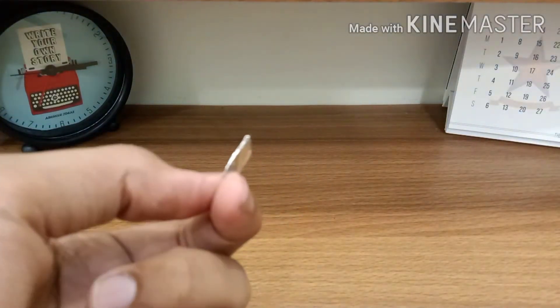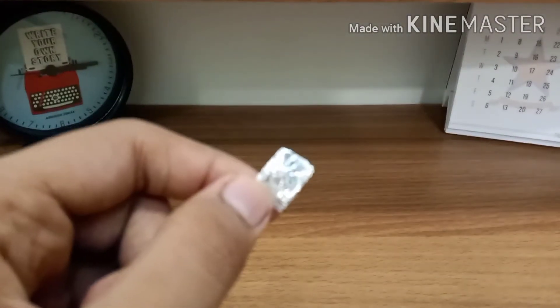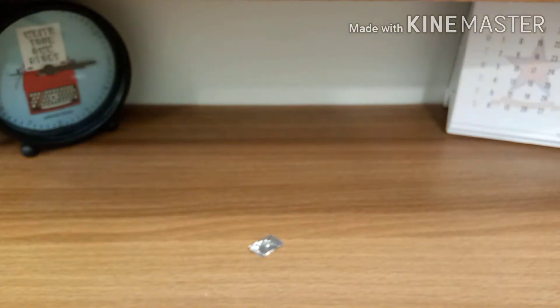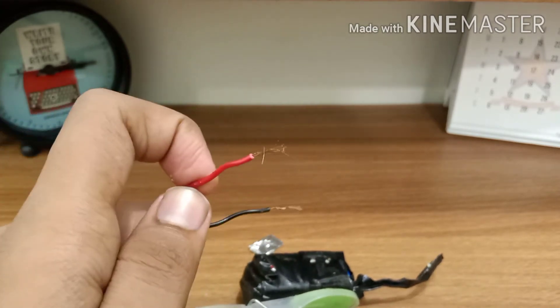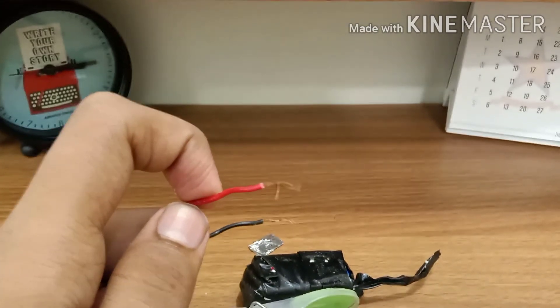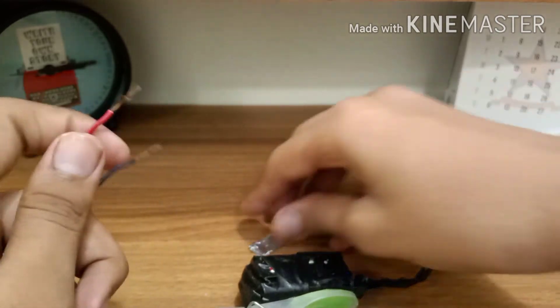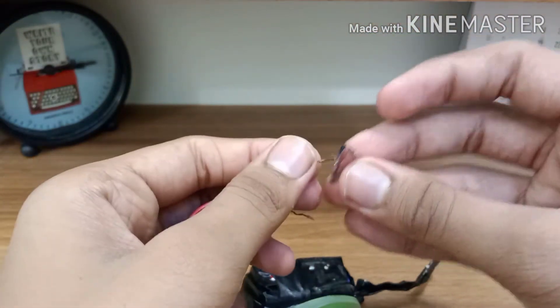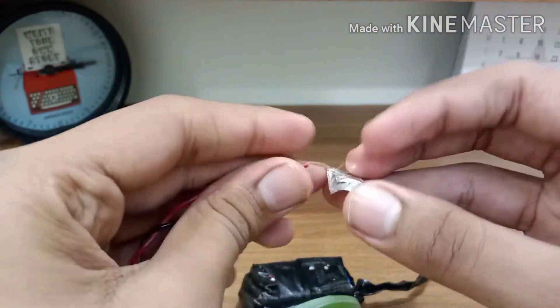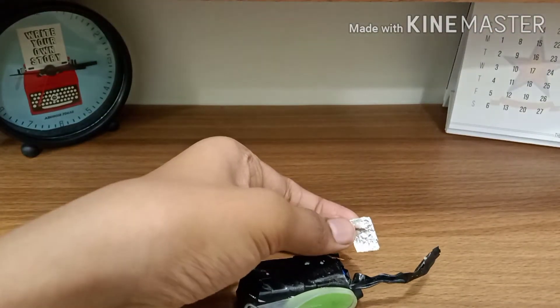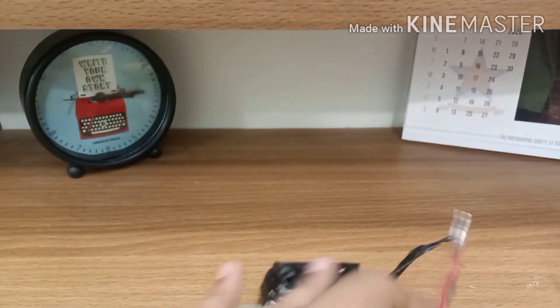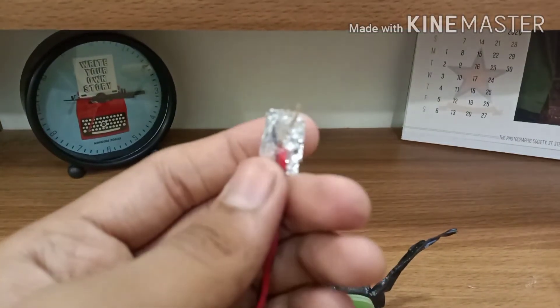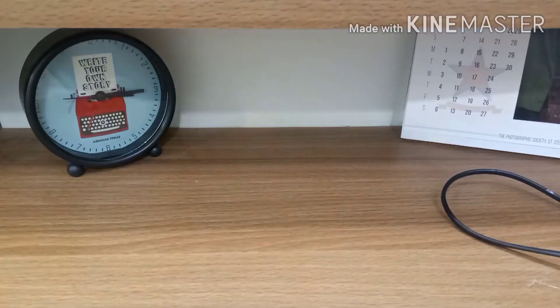Now take aluminium foil and connect the red wire of the battery to it. Similarly, connect the red wire of the buzzer to it. One red wire on one aluminium foil and one red wire, or we can say the red wire of the buzzer, on another foil. You can paste it with the help of a glue gun.